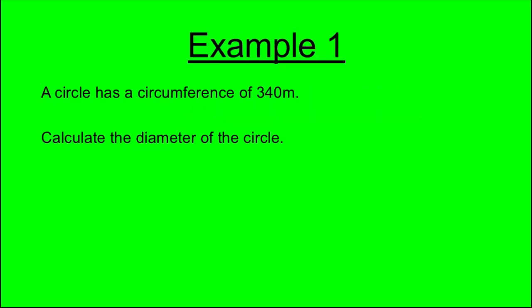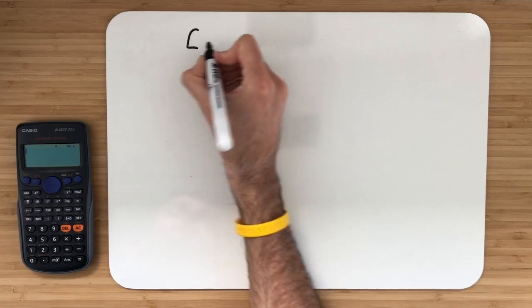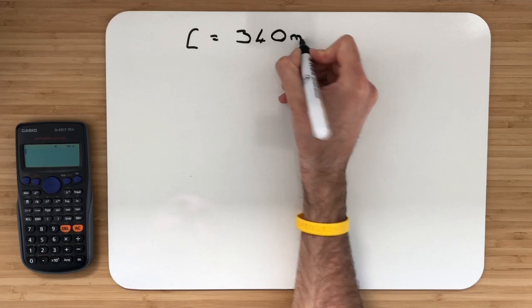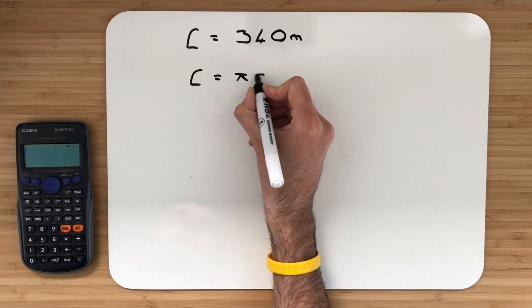Example 1. A circle has a circumference of 340 metres. Calculate the diameter of the circle. We've been asked to calculate the diameter of a circle with a circumference of 340 metres. So the circumference is 340 metres. I will begin with my formula, C is equal to π d.